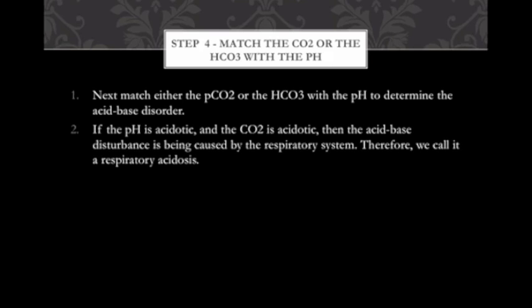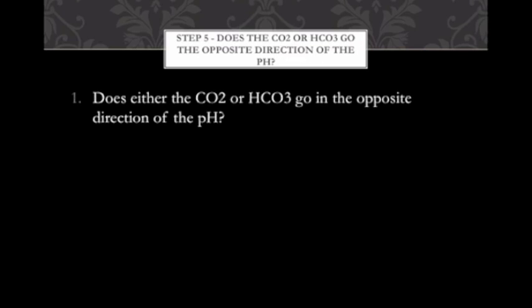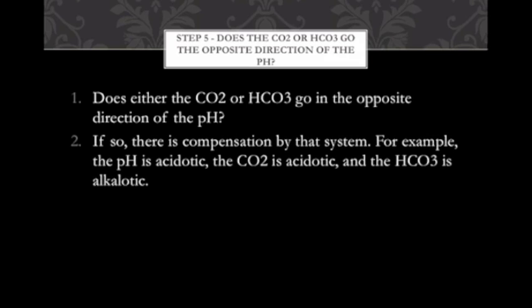Step four — match the CO2 or bicarb with the pH. If the pH is acidic and the CO2 is acidic, the disturbance is respiratory. For example, pH of 7.1 is acidic; if CO2 is greater than 45 (also acidic), it must be respiratory acidosis — they're going in opposite directions as expected per ROME. If the pH is alkalotic and the bicarb is alkalotic, it's metabolic in nature.